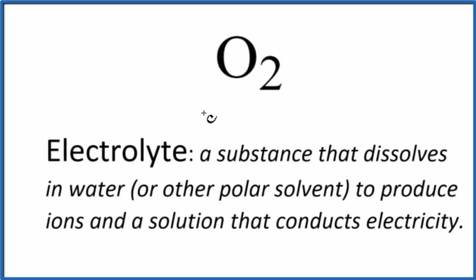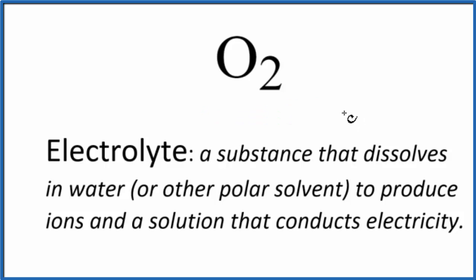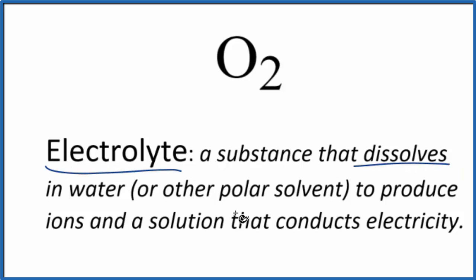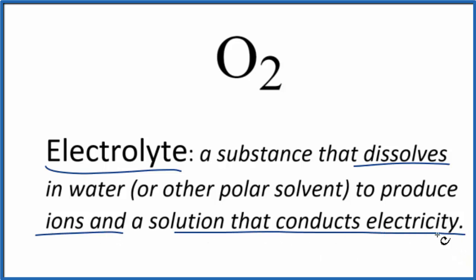The question is whether O₂ — oxygen gas, also called diatomic oxygen — is an electrolyte or a non-electrolyte. When we have an electrolyte, that's a substance that dissolves in water, or another polar solvent, and produces ions, and then the solution conducts electricity.